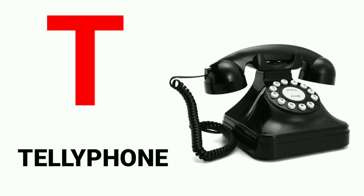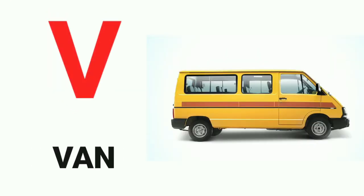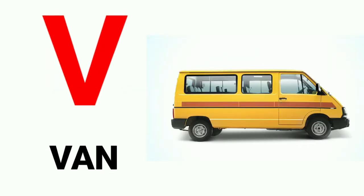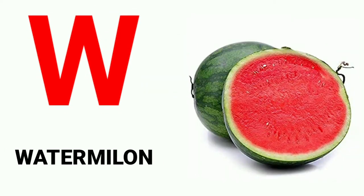R for rose, S for sun, T for telephone, U for umbrella, V for pen, W for watermelon.